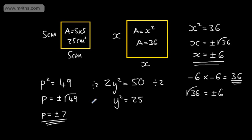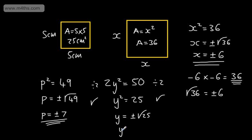Now I'm going to square root both sides of the equation, which gives me y equals plus or minus the square root of 25, so y equals plus or minus 5. That's solving the most straightforward quadratic equations by taking the square root of both sides.